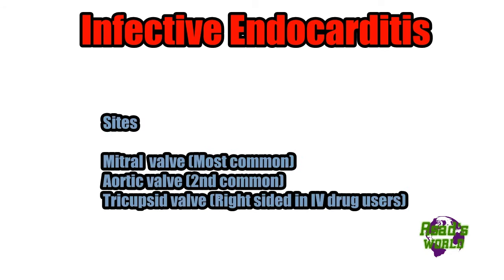The most common site of infective endocarditis is the mitral valve. The second most common site is the aortic valve. In IV drug users, the right-sided tricuspid valve is involved.